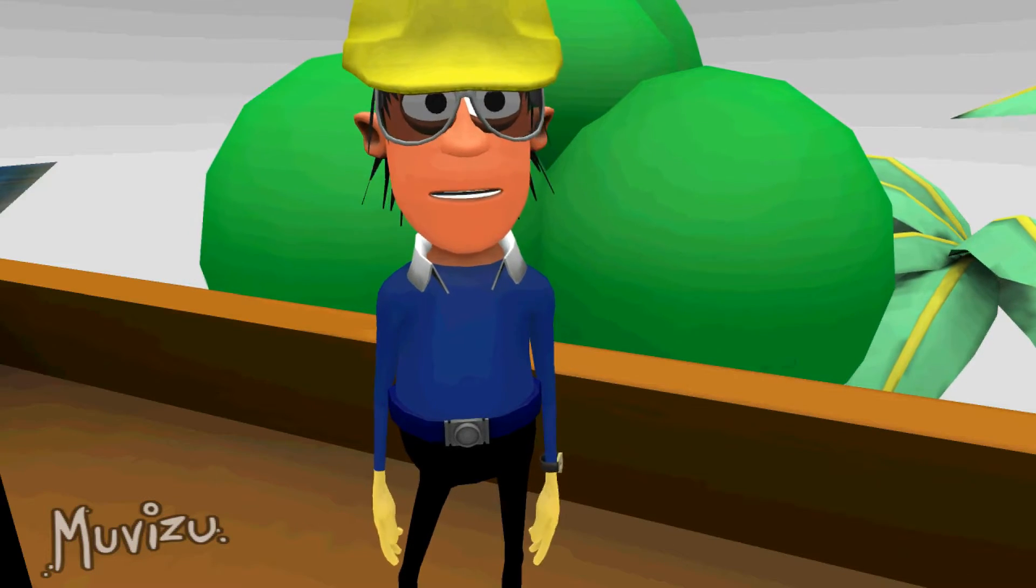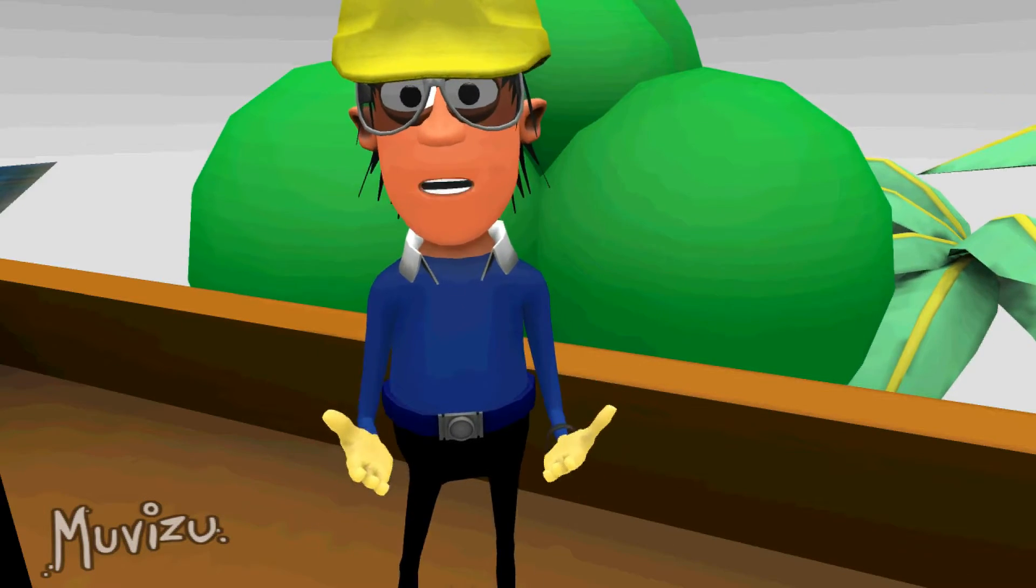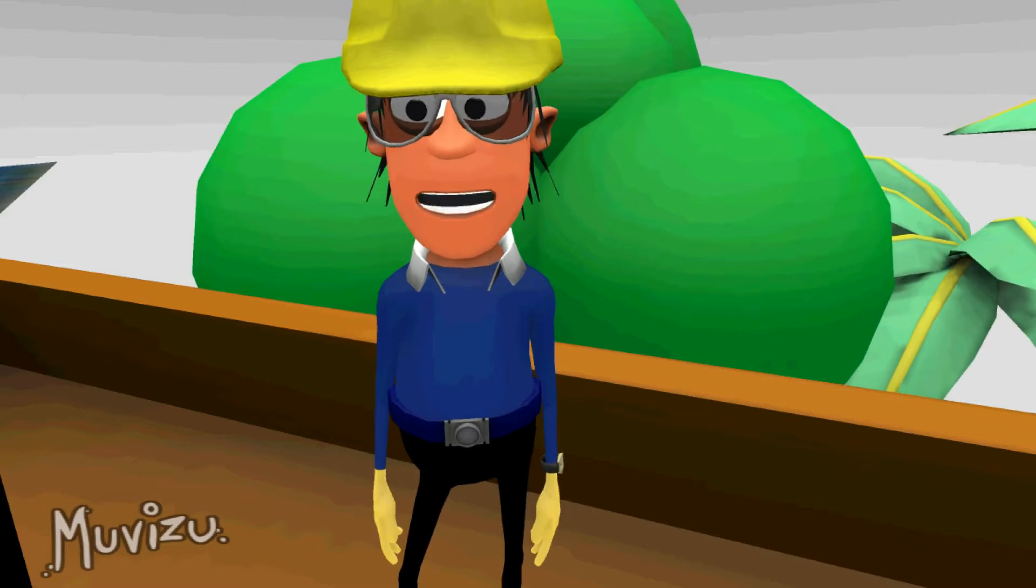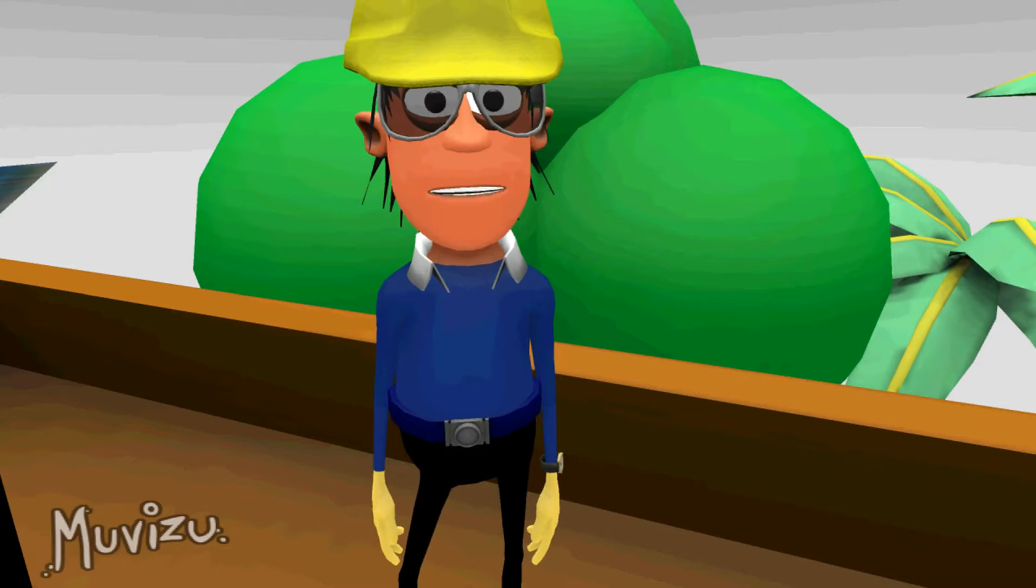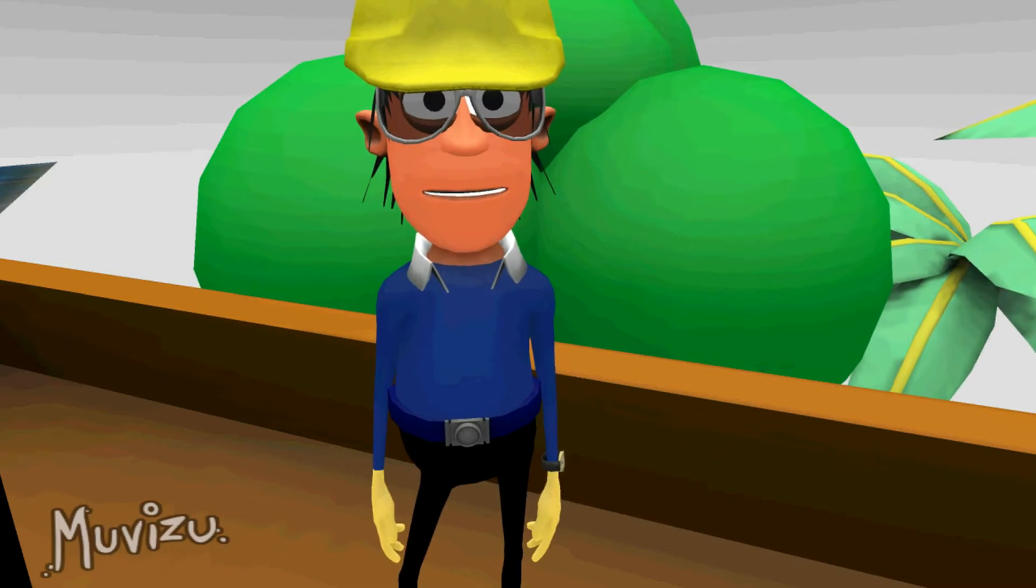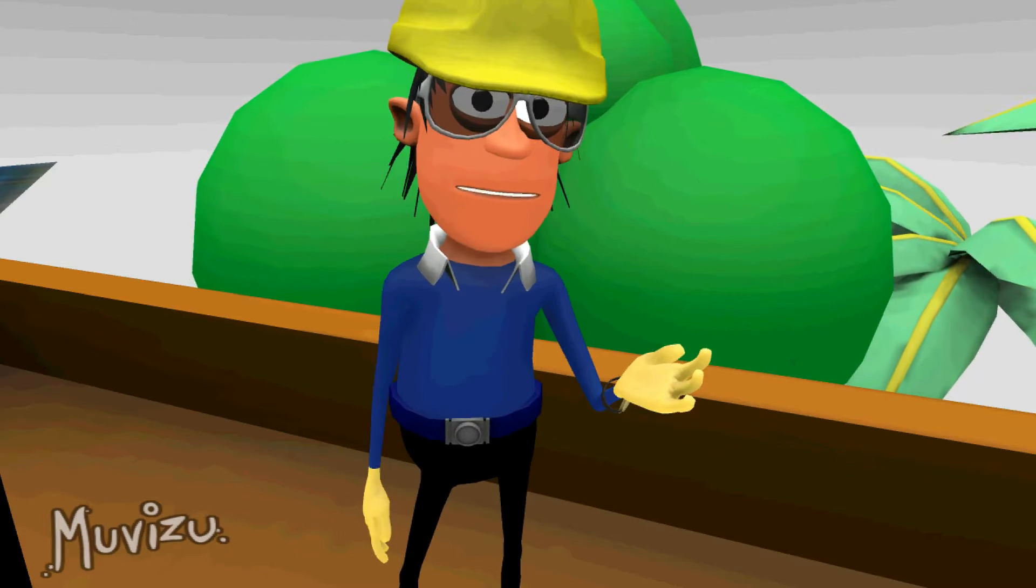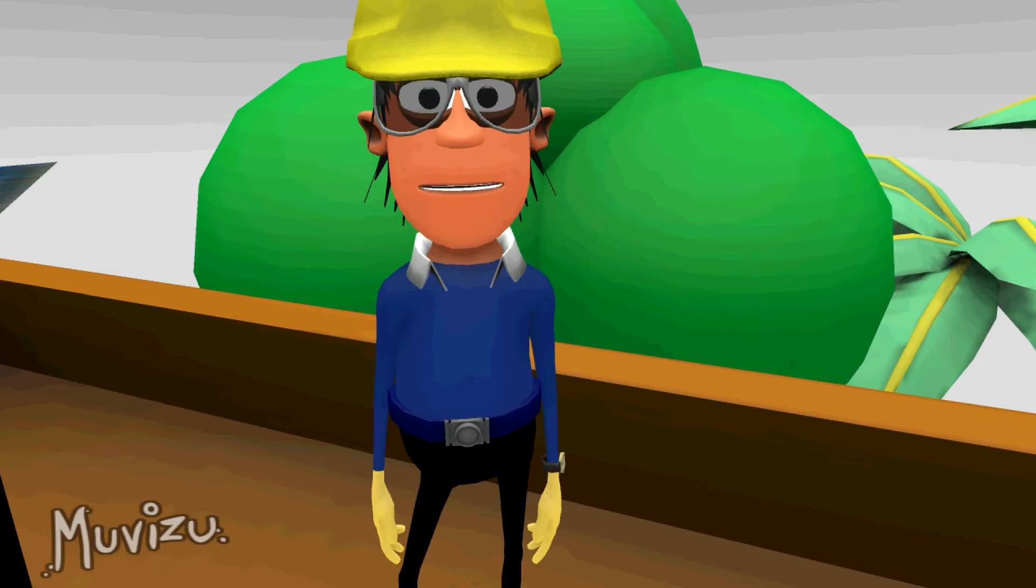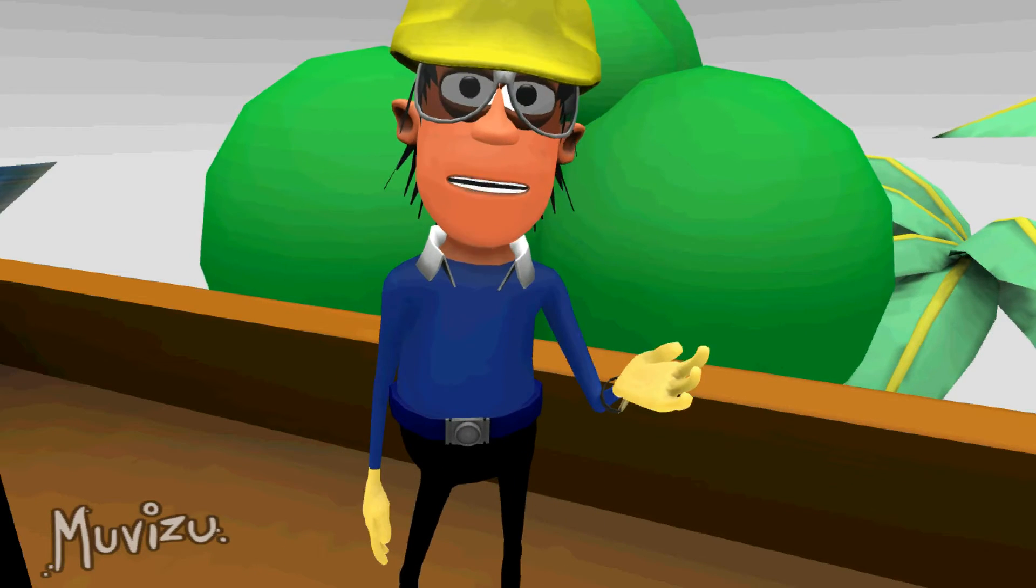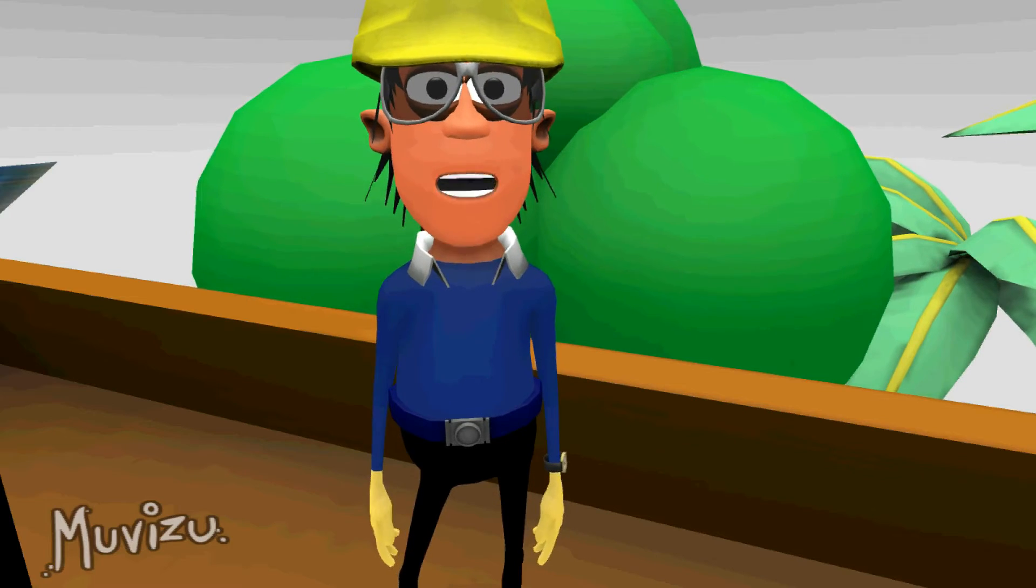I chose solar plate because solar radiation is freely available everywhere. It is a renewable source of energy, and the sun will continue to radiate for billions of years. Solar radiation generates 10 raised to the power 16 watts energy on the earth's surface, and the total power requirement of the whole world is 10 raised to the power 13 watts. So if we can use only 5% of this energy, it will be 50 times more than our requirement.